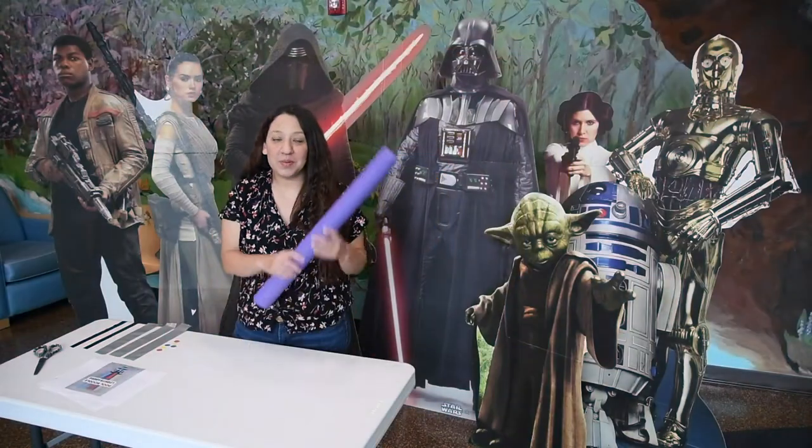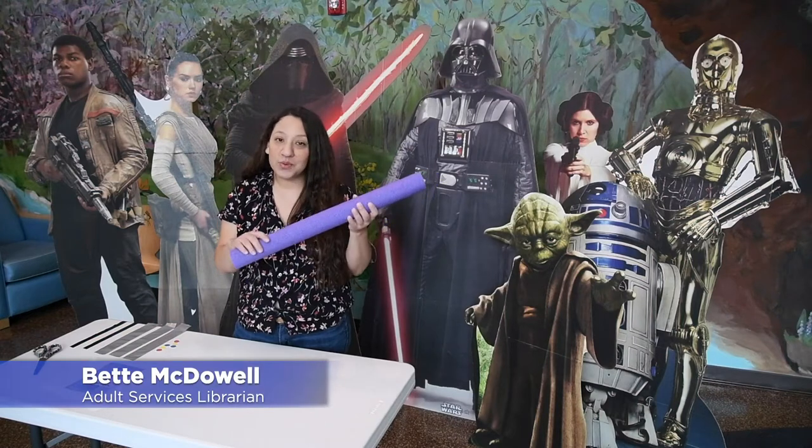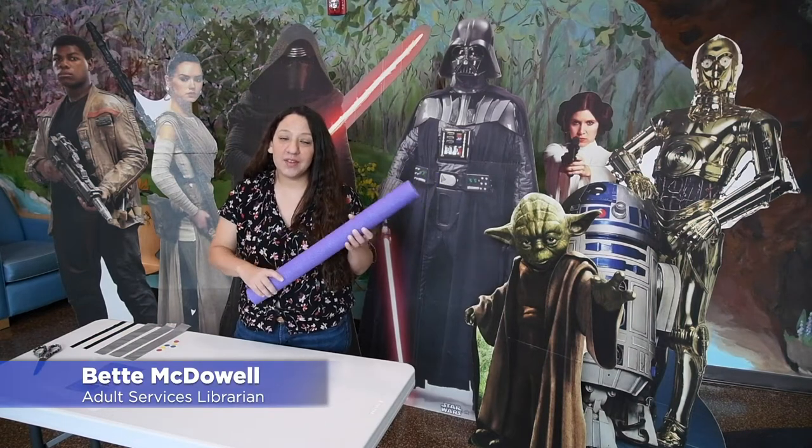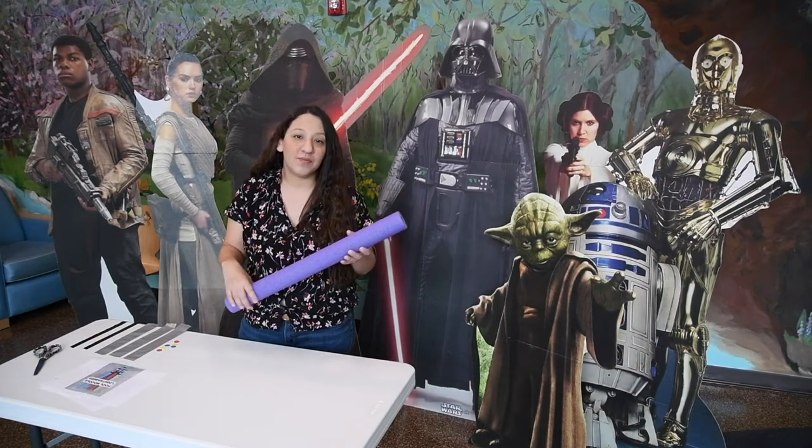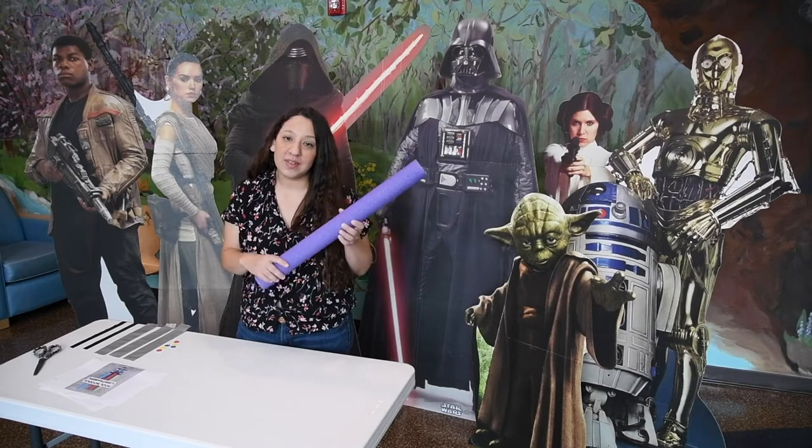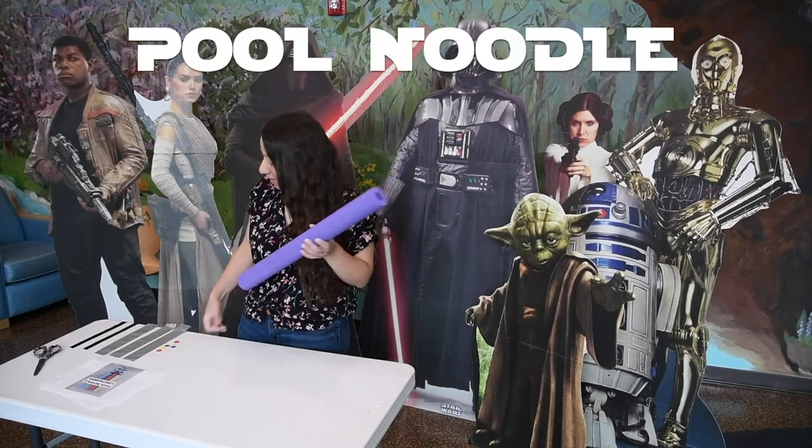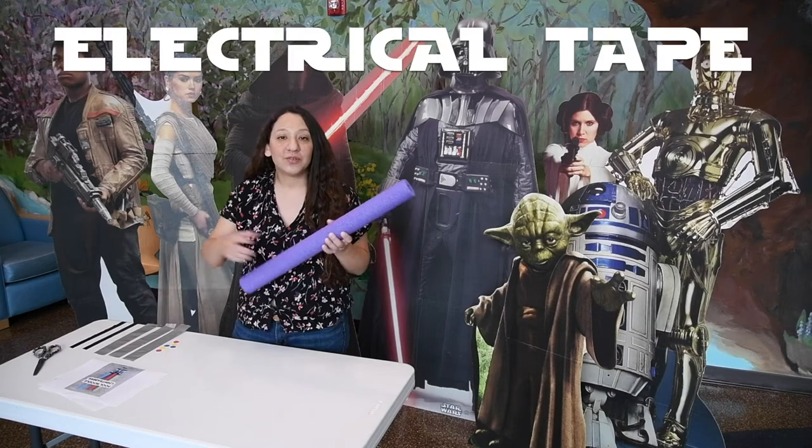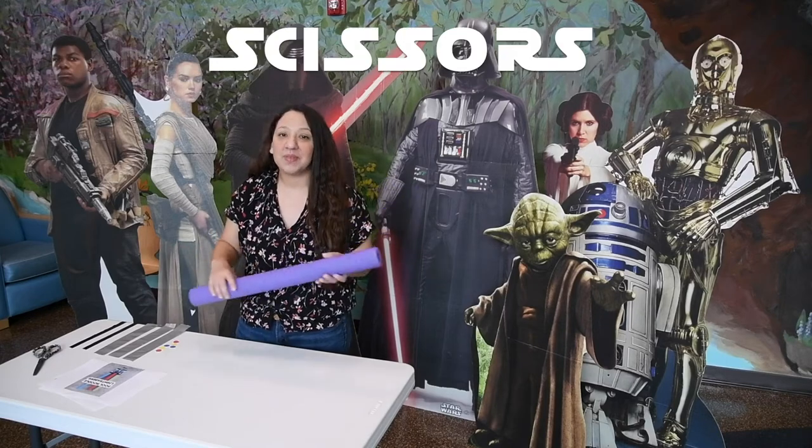Welcome everybody. This morning we're going to be making a lightsaber out of a pool noodle. If you picked up your kit, you should have everything that you need. If you're following along at home and you didn't get the supplies, all you need is a pool noodle, some duct tape, some electrical tape, and some scissors.